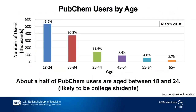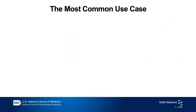Then who are our users? Generally speaking, about half of our users are aged between 18 and 24, and those in this age group are likely to be college students. And many of them are required to take some chemistry courses like general chemistry or organic chemistry. Then you may wonder how they use PubChem.